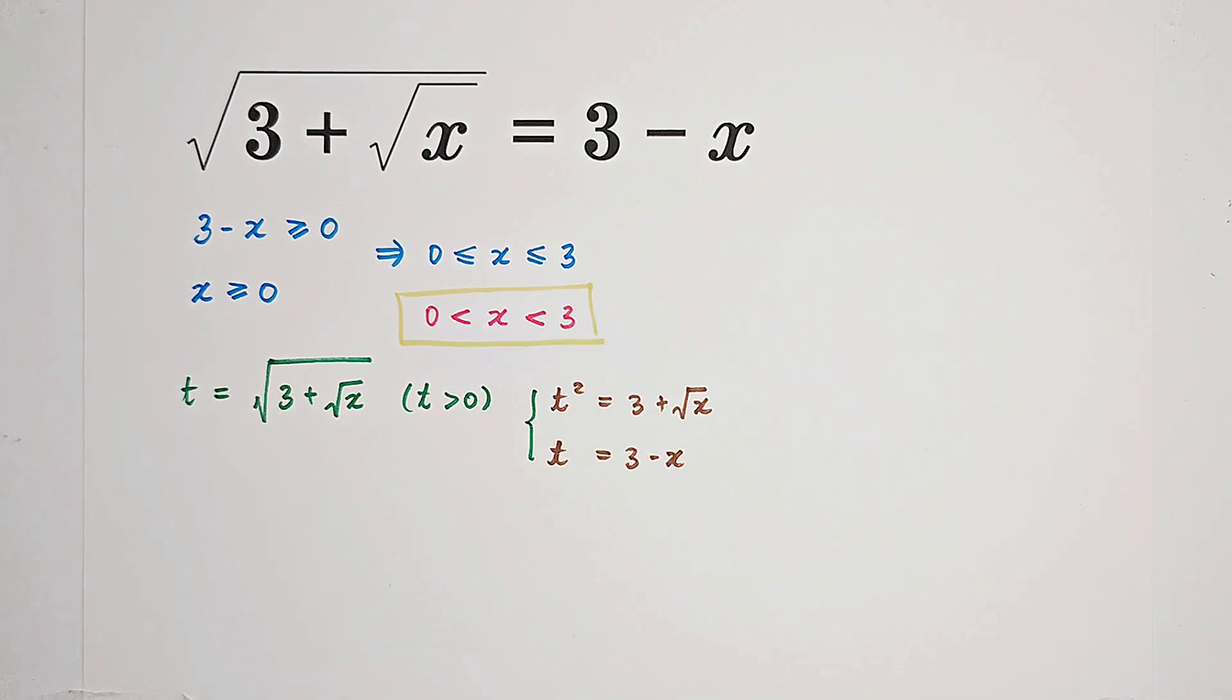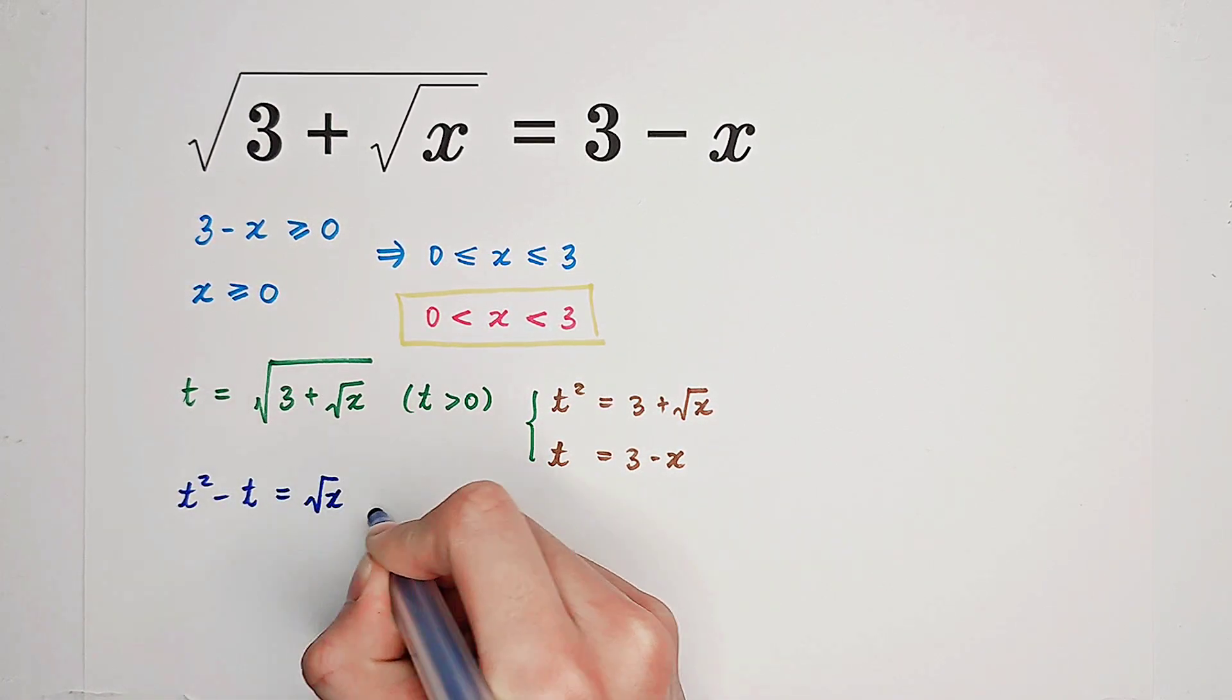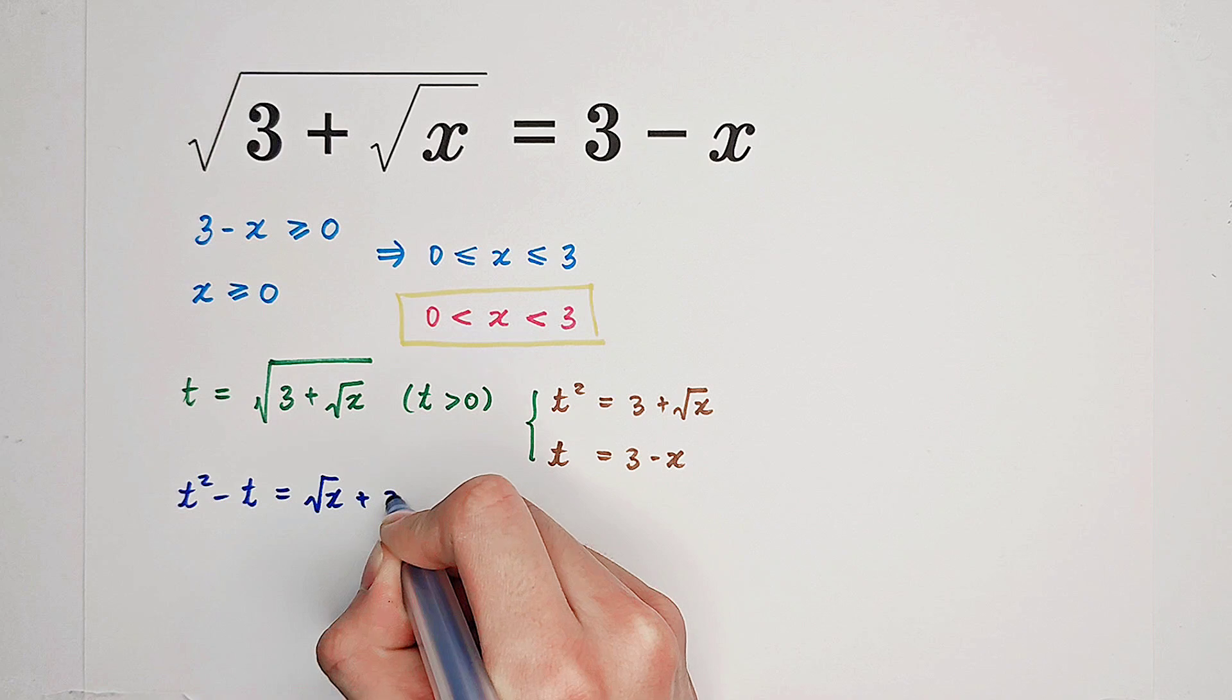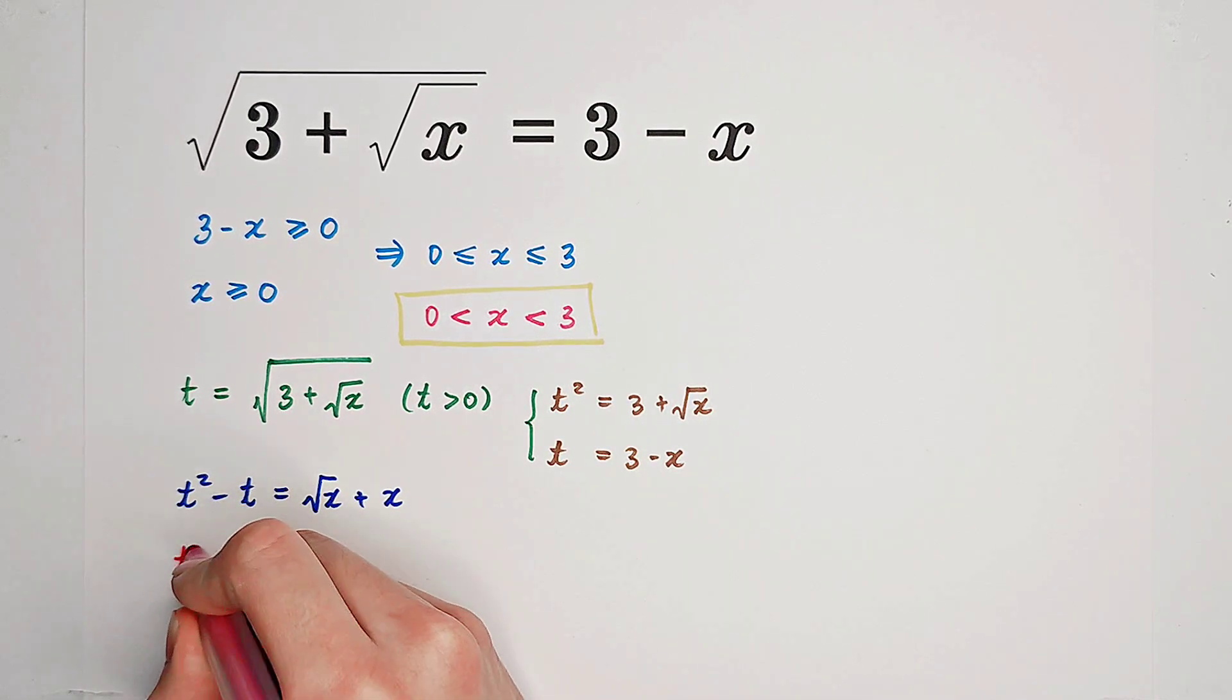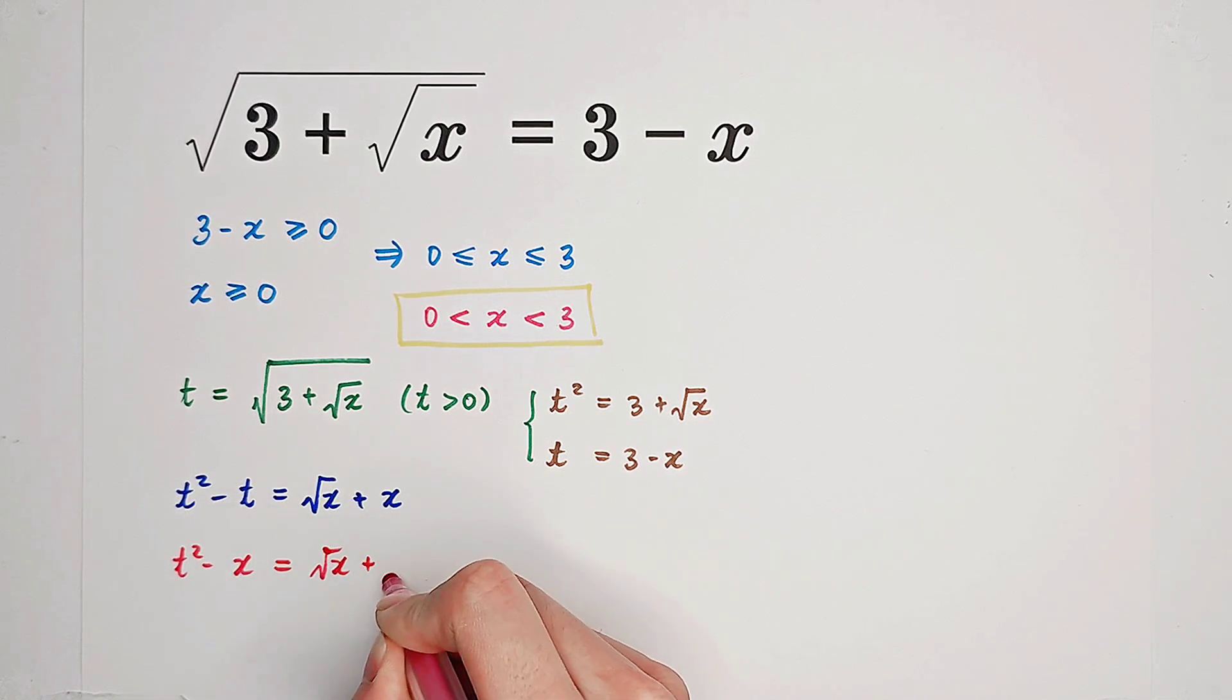Now let's subtract these two equations. We get t squared minus t equals square root of x plus x. So t squared minus x equals square root of x plus t.